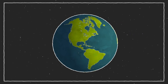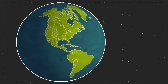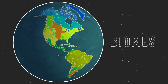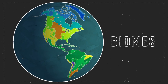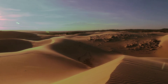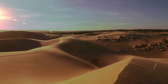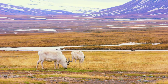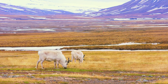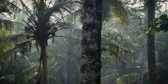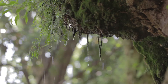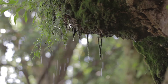Habitats near each other on Earth with similar climates are grouped into biomes. They may get very little rain and be hot like the desert, or cold like the tundra. They may get lots of rain and be hot like the tropical rainforest, or cool like the temperate rainforest.